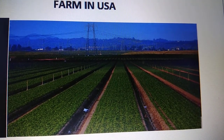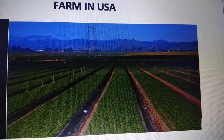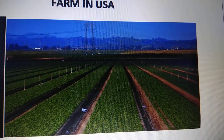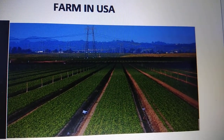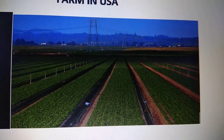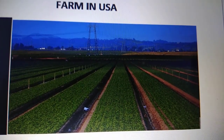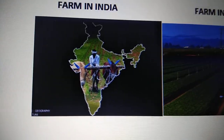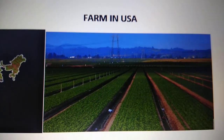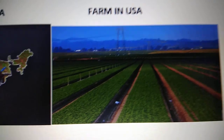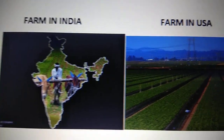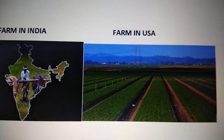In the USA, the farmer takes scientific guidance because his computer is linked to a satellite, so he gets the latest information about how to increase farm production. In India the farmer works like a peasant, whereas in the USA the farmer works like a businessman. This is the comparison between a farm in India and a farm in the USA.